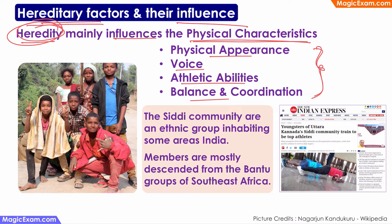When we see that heredity definitely affects the physical development of a child, there is one interesting experiment you can read about. There is a community called the Siddhi community in Karnataka, which can trace its origin back to Southeast Asia and is of African descent. People of African descent seem to be doing exceptionally well in various sports around the world, possibly due to inherent genetic advantages such as great musculature. The Karnataka government is trying to see if children from the Siddhi community, given specific attention and trained in various sports, can do well — an experiment you can read about on various websites and Wikipedia.